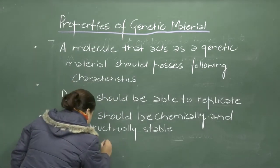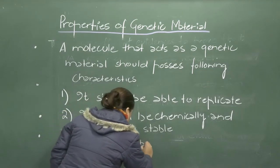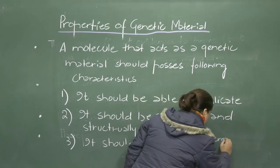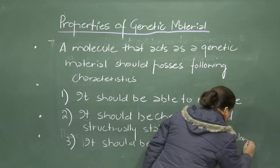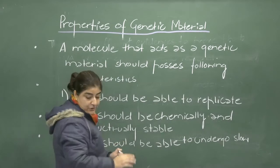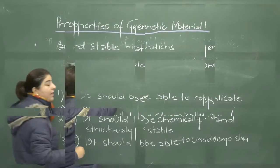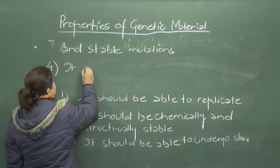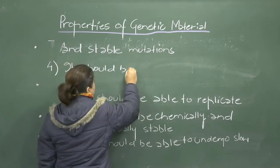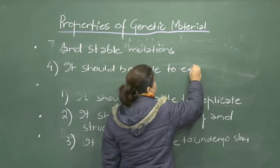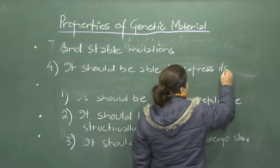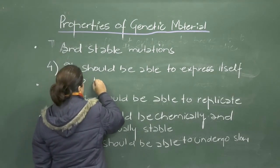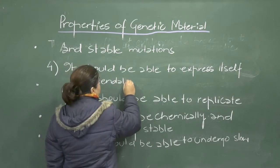The third property is that it should be able to undergo slow and stable mutations. The fourth property of the genetic material should be that it should be able to express itself into Mendelian characters.